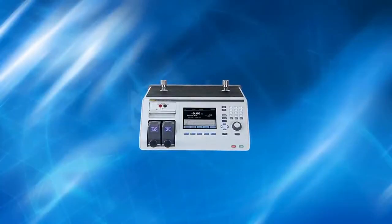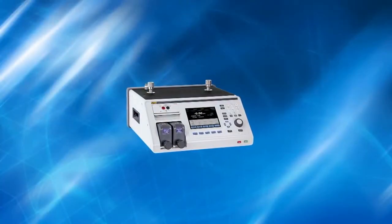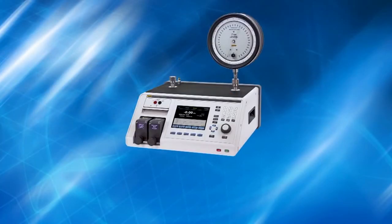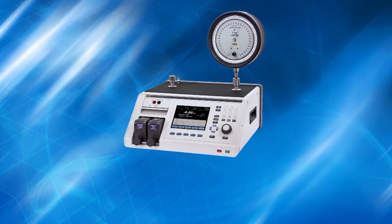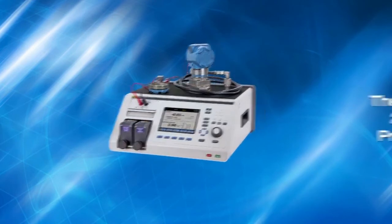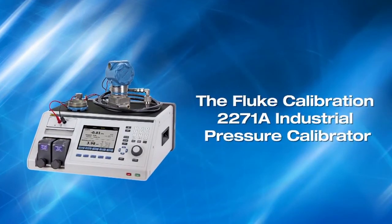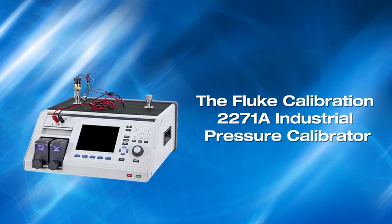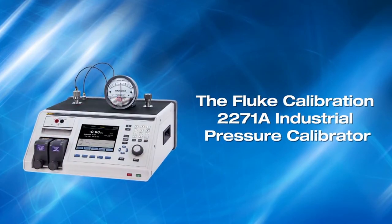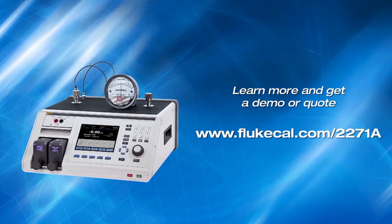Simple setup and simple usage is the key to efficient calibration and testing of pressure gauges, transmitters, and switches. The Fluke Calibration 2271A Industrial Pressure Calibrator is the complete solution. For more information, visit FlukeCal.com.